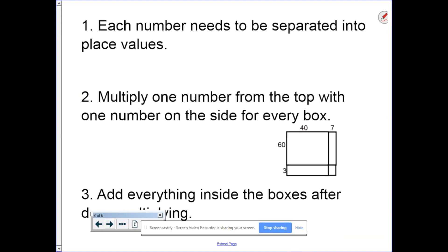Okay, some things to remember. One, each number needs to be separated into place values. So if I had 96, that becomes 90 and 6. Or if I had 374, that becomes 300, 70, and 4.